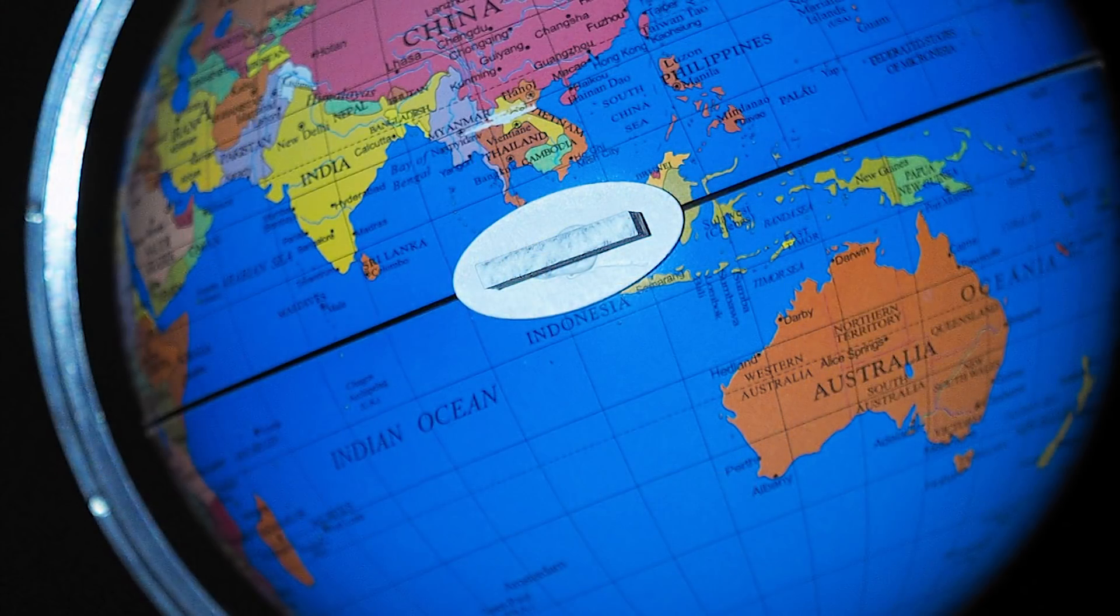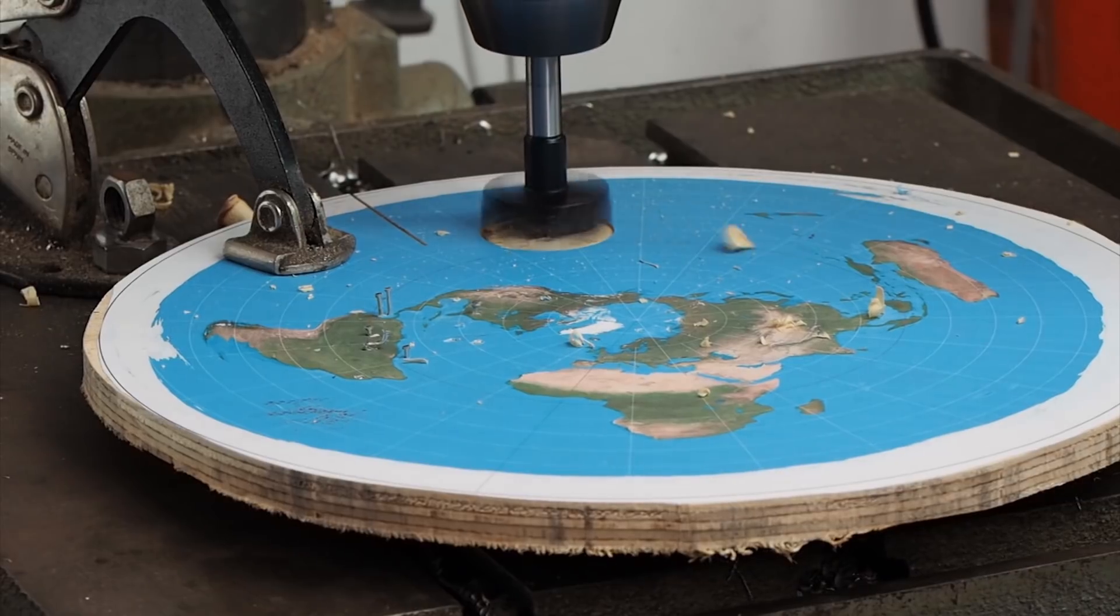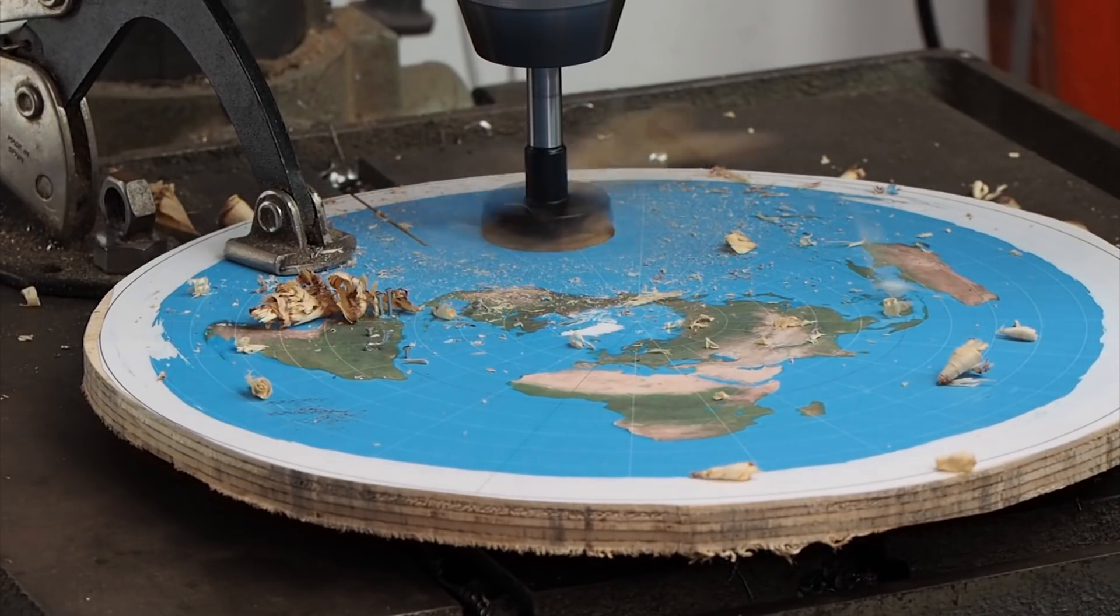At solar noon, objects cast no shadow at all, showing the sun is directly overhead. That puts another hole in the flat Earth model.